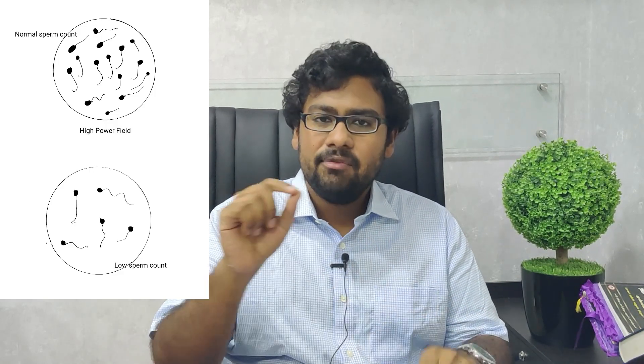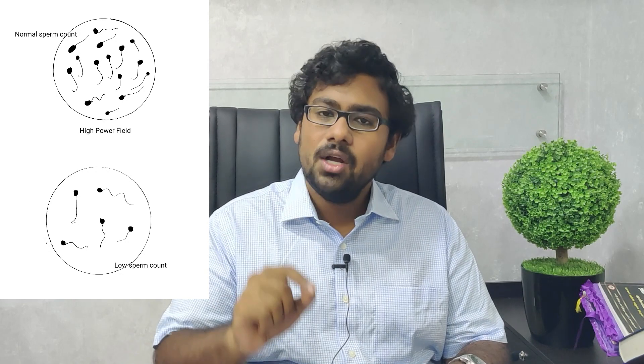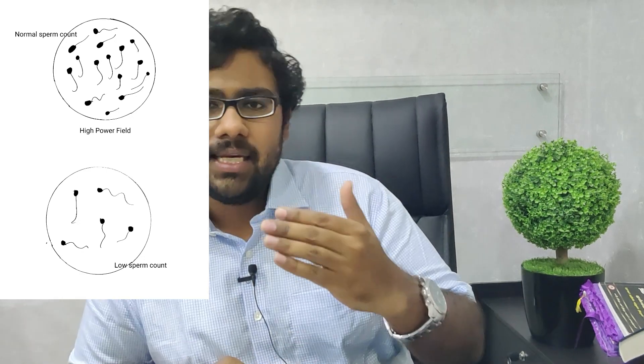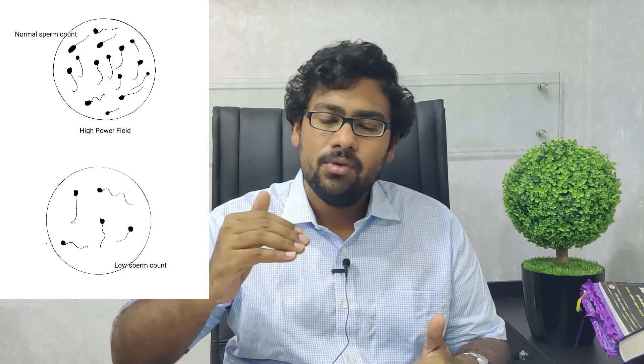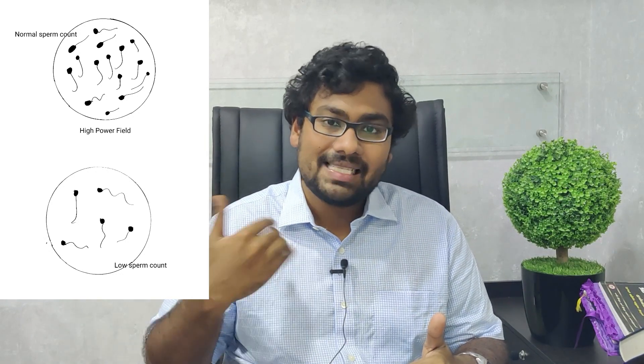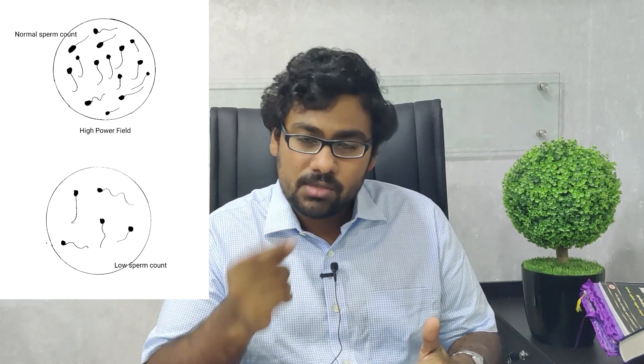Under the microscope, under high power field (HPF), if we count 15 or more sperms per HPF, the individual is said to have a count of 15 million per ml or greater. But if the number of spermatozoa seen in the high power field is less than this — say only one or two, or five to six, or eight to ten sperms — these individuals are said to have low sperm count, also called oligozoospermia.